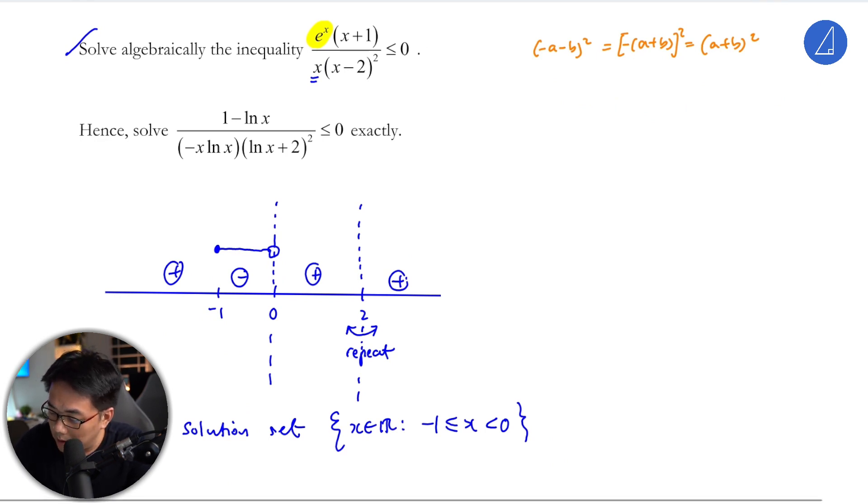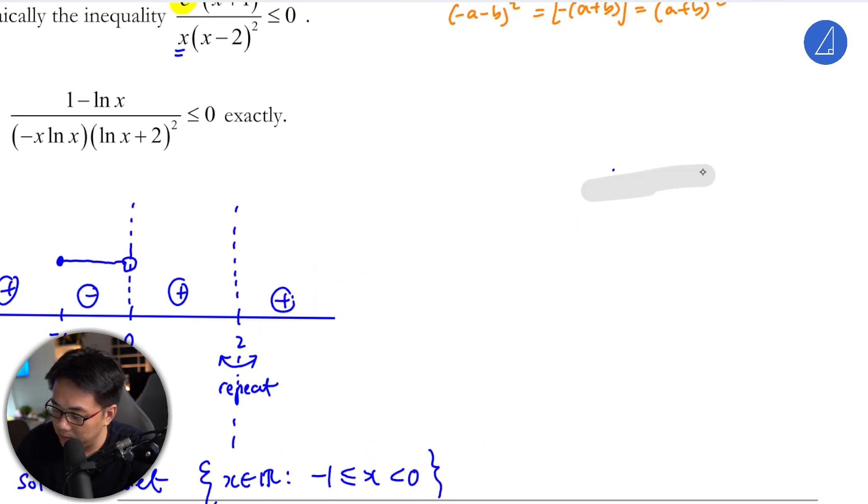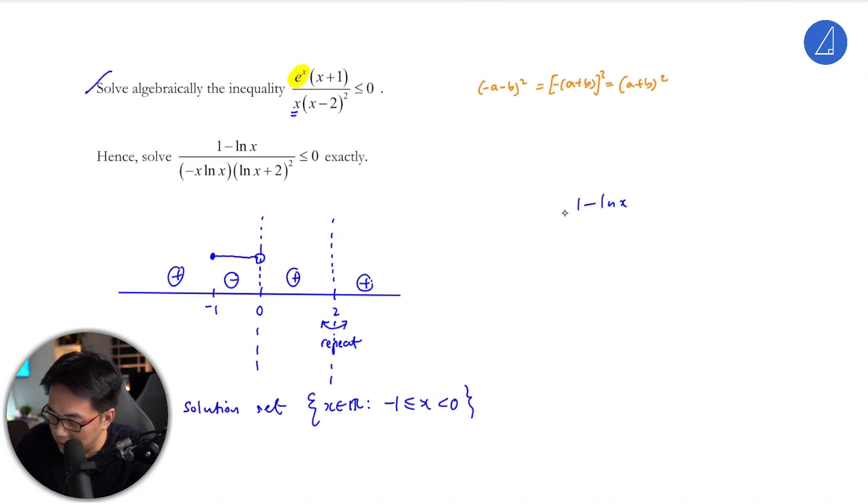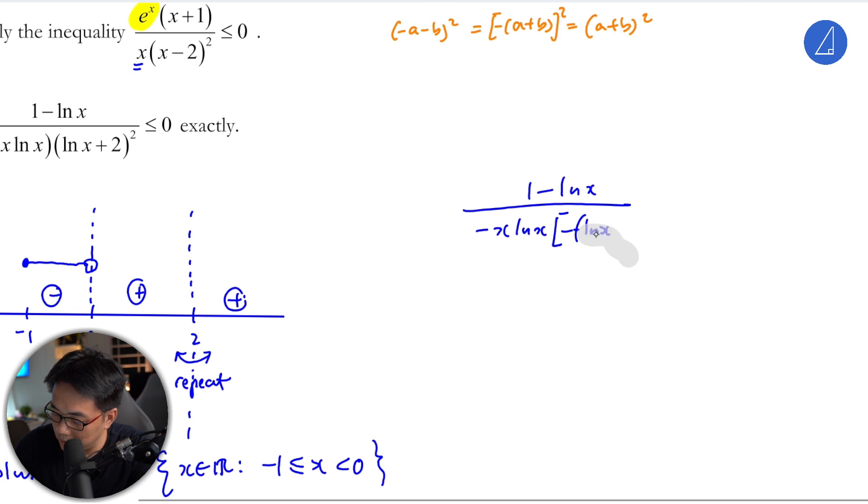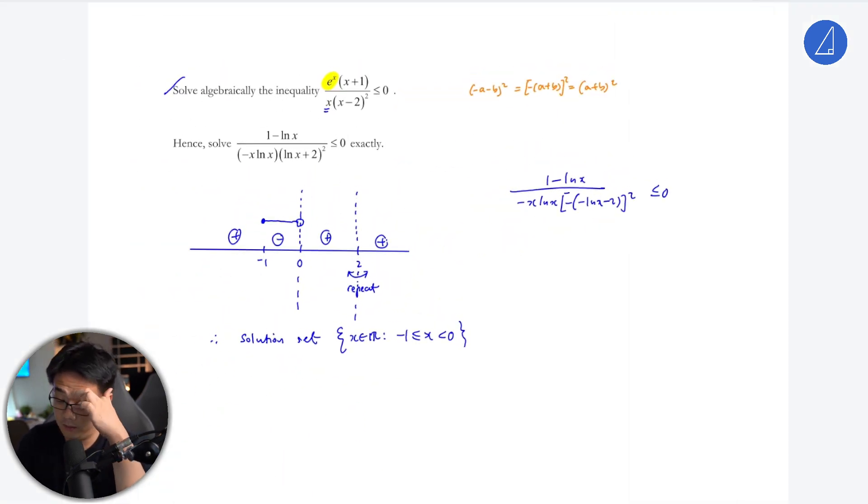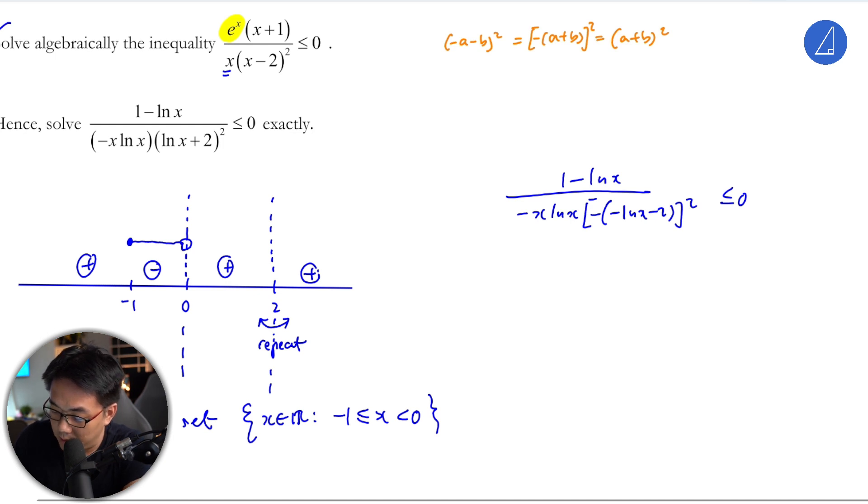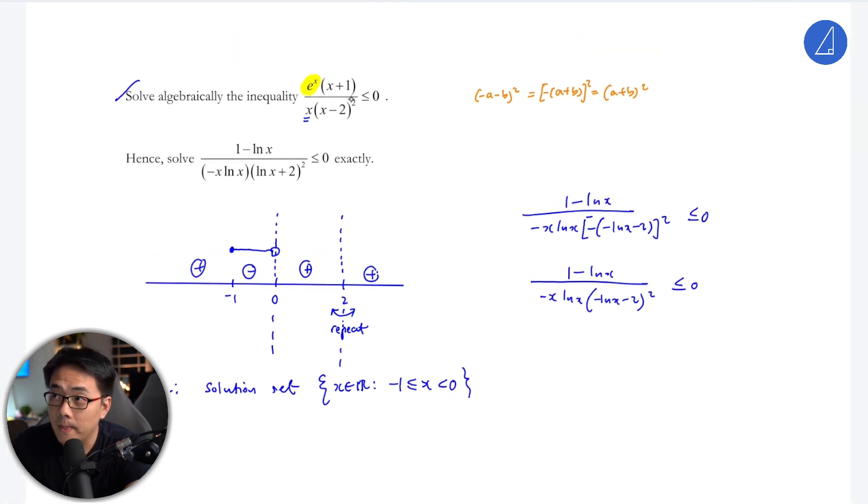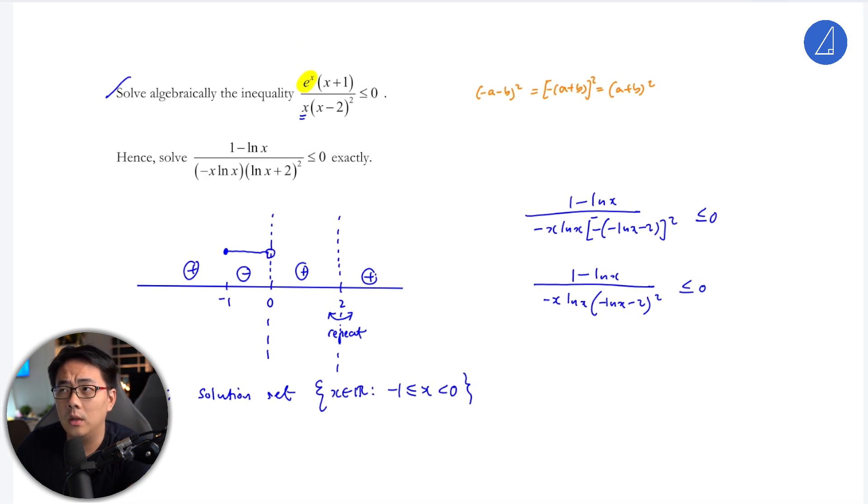From here I can see that this 1 − ln x is actually negative ln x. I'll bring the negative out, so this will be (1 − ln x − 2)² less than zero. Once this is done, I can rearrange this: it will be 1 − ln x, and that will be −(ln x − 2)².